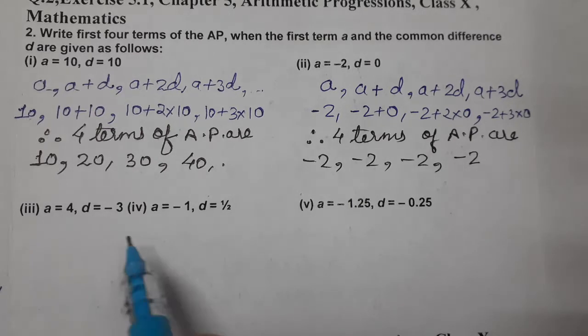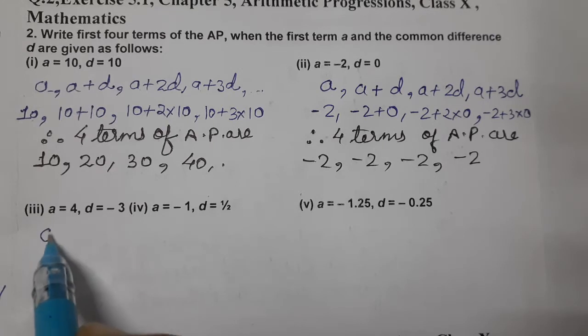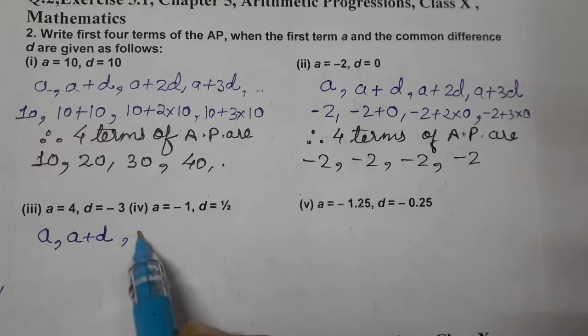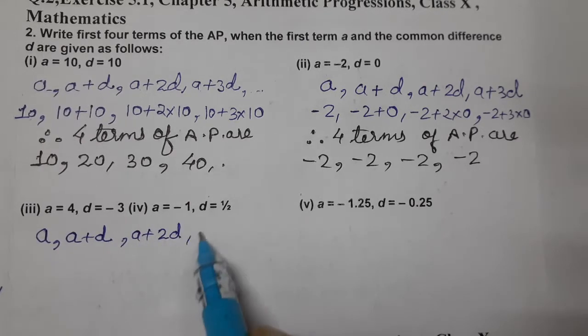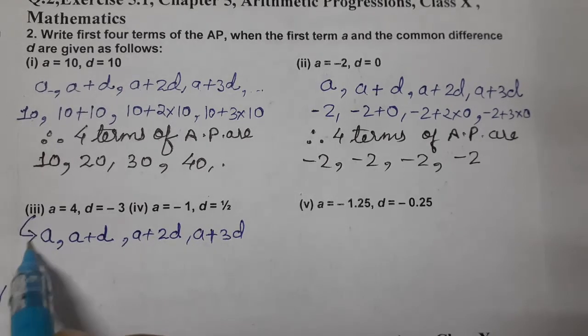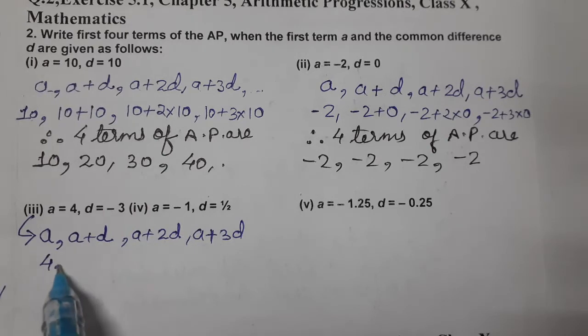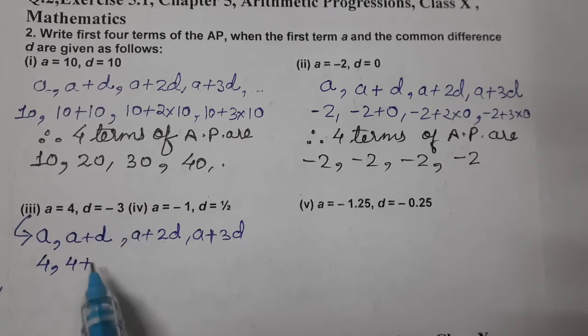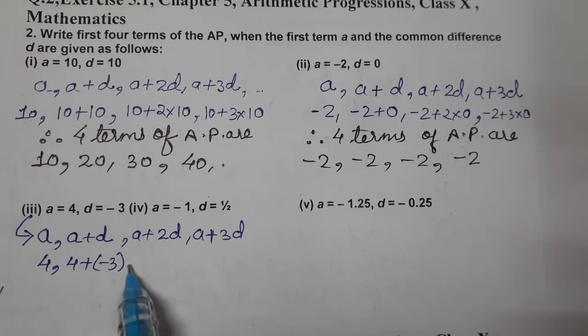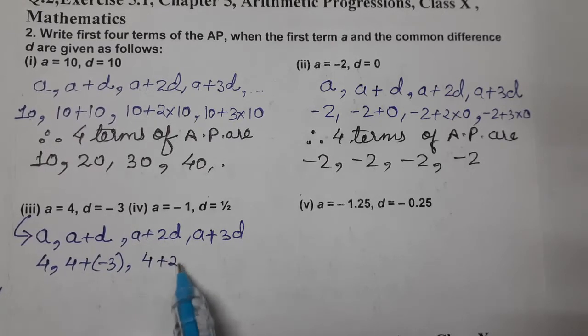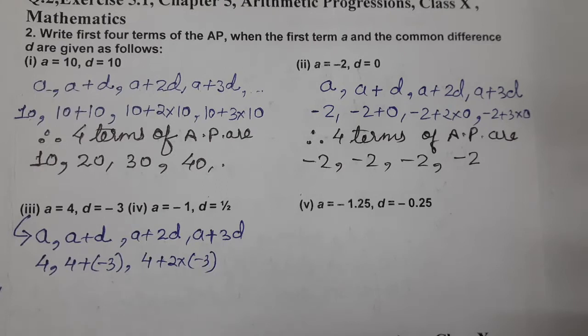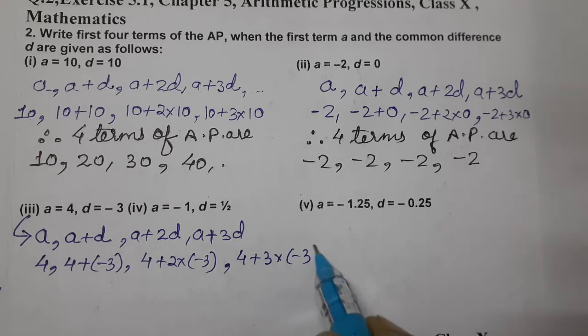Third one, A is 4. So, again, AP we know A, A plus D, A plus 2D and A plus 3D. This is the third one we are doing. Now, put the value, 4, 4 plus D, D is minus 3, 4 plus 2 into minus 3, then 4 plus 3 into minus 3.